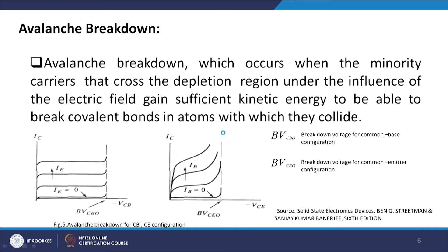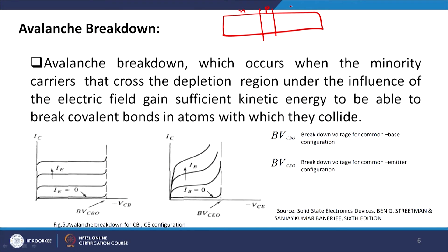The third second-order effect is avalanche breakdown. The base-collector junction is always reverse biased. Under reverse bias, majority carriers cannot cross the junction, but minority carriers — holes on the N side and electrons on the P side — experience a downhill potential and contribute a small current. Since the number of minority carriers is very low, the associated current is very small, but this sets up the mechanism for breakdown.